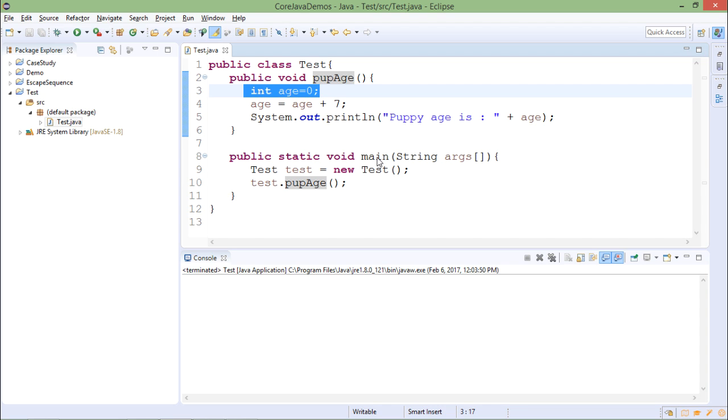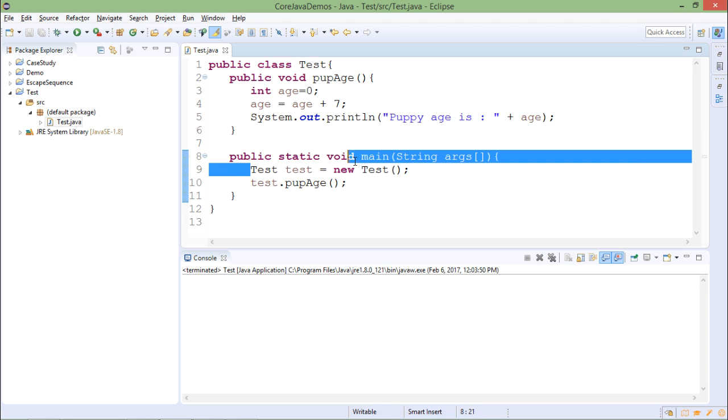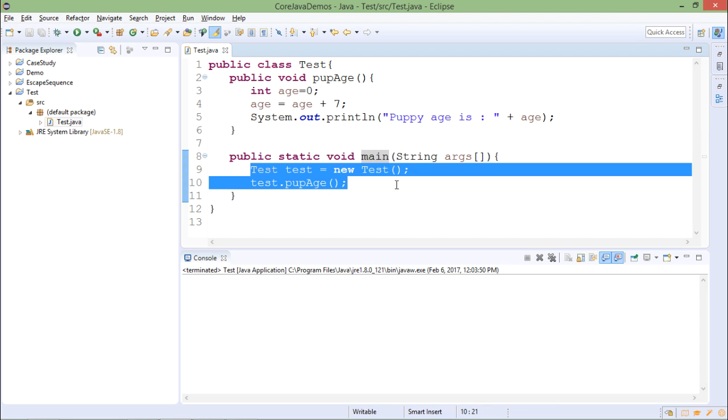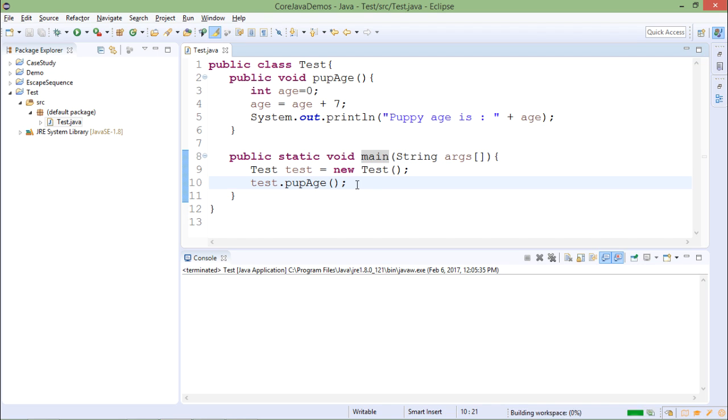In main method I am creating the object of class test and I call the pupAge method. So this will print the age which is 7. Let me run this, puppy age is 7. You can see the output onto the console.